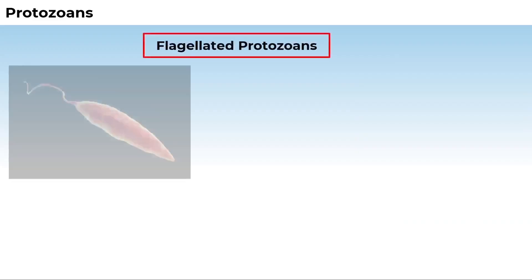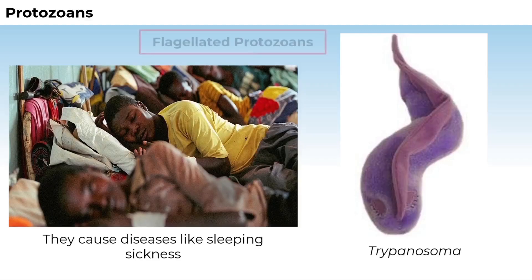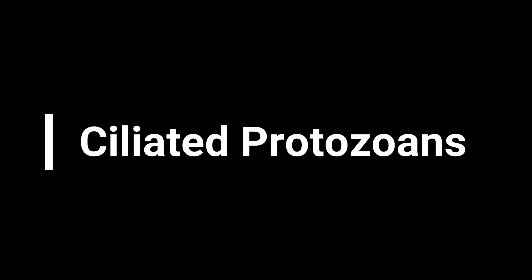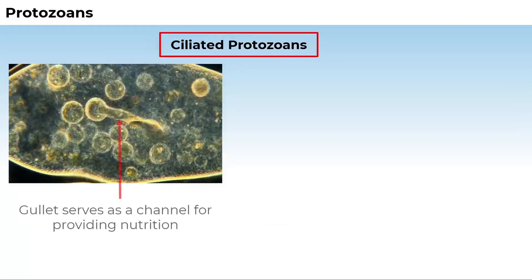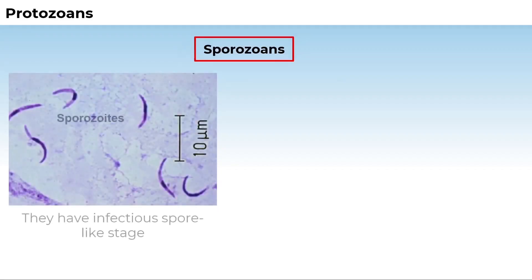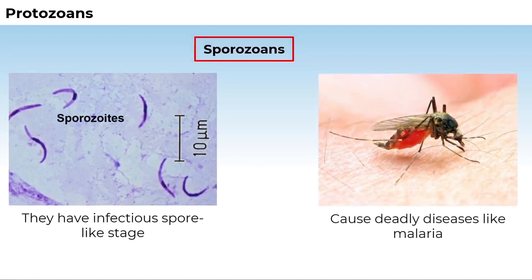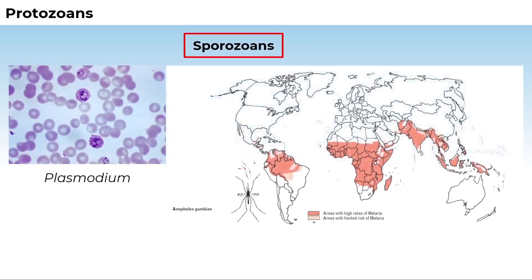Flagellated protozoans are either free-living or parasitic, and have flagella. The parasitic forms cause diseases such as sleeping sickness; one example is Trypanosoma. Ciliated protozoans are aquatic, actively moving organisms due to the presence of thousands of cilia. They have a cavity known as gullet that opens to the outside; coordinated movement of cilia steers water and food into the gullet. One example is Paramecium. Sporozoans have an infectious spore-like stage in their life cycle and cause malaria; the most notorious is Plasmodium, the malarial parasite.